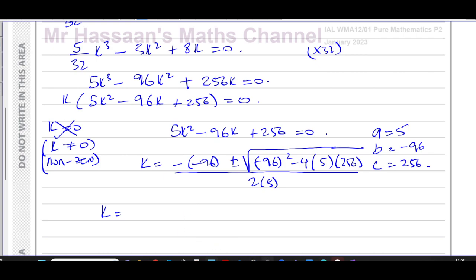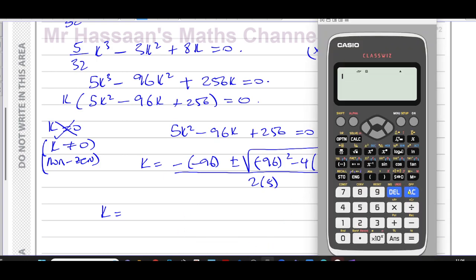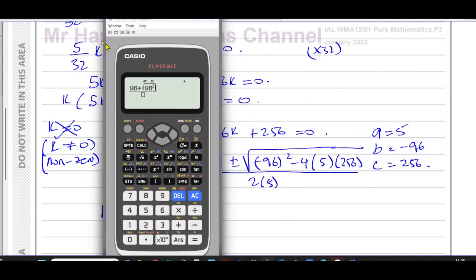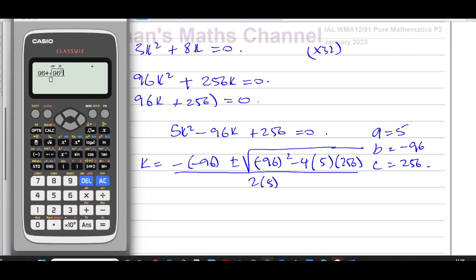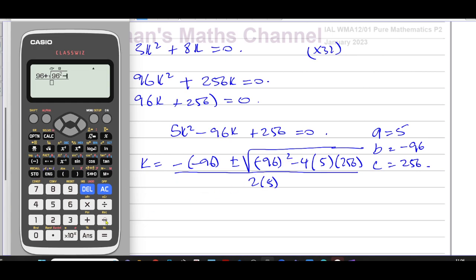So that should give us our two values of k. So let's put this in our calculator. And so this is going to become basically positive 96, because minus and minus is plus, plus, and you're going to have 96 squared. And we're going to have minus 4 times 5 times 256 all over, and that's 2 times 5. So that gives us 16 as the one answer.